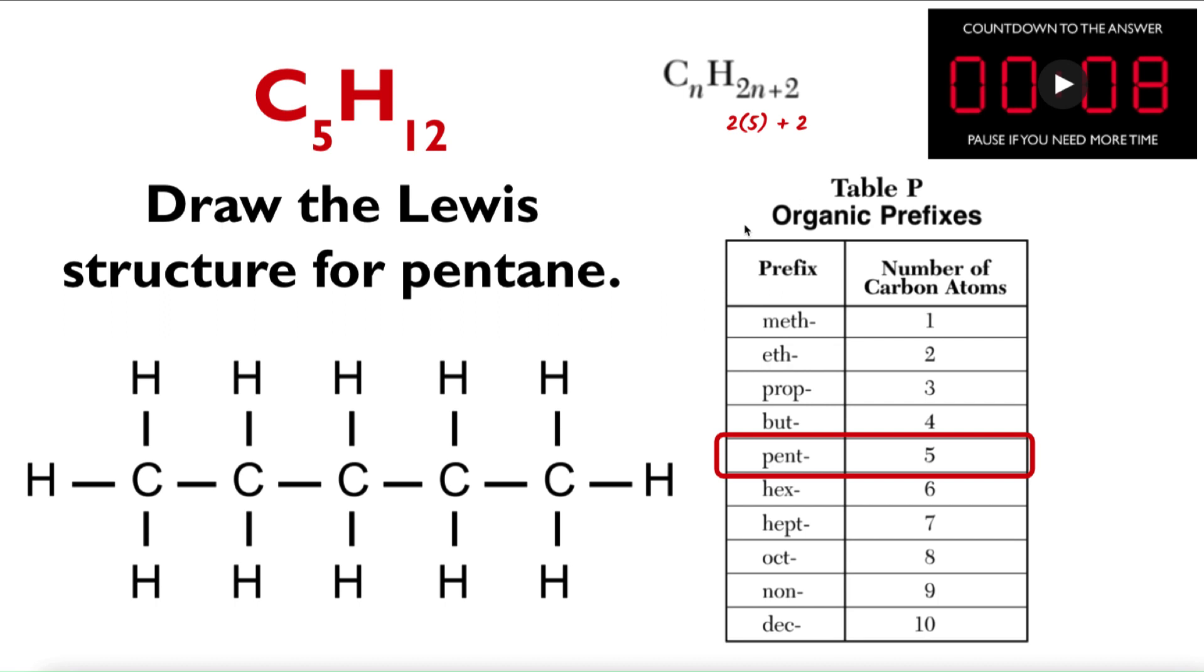I'm drawing 5 carbon atoms. Each carbon atom has 4 bonds coming from it, and I end up with 12 hydrogens and 5 carbons all connected by single bonds. Should look something like this.